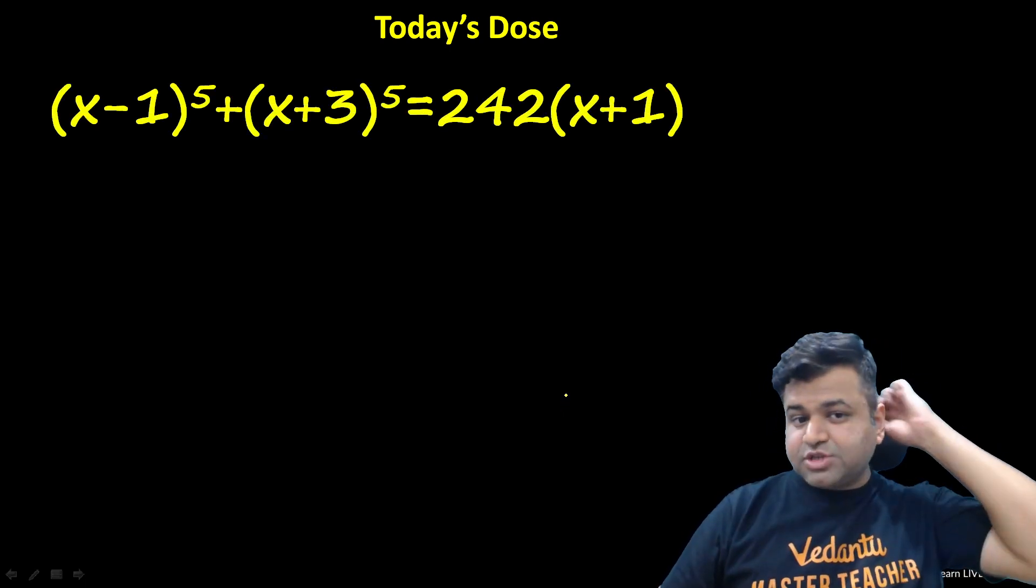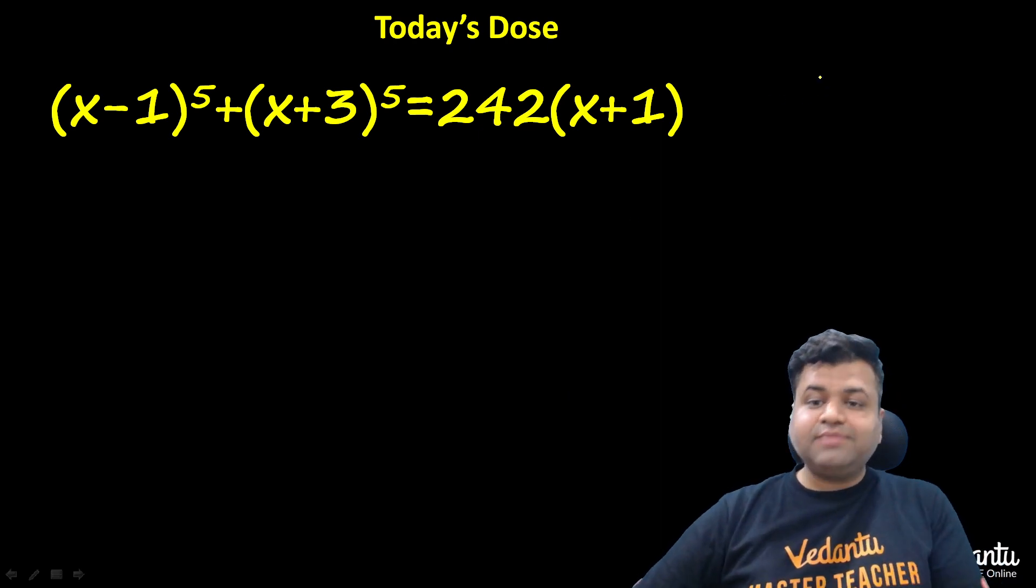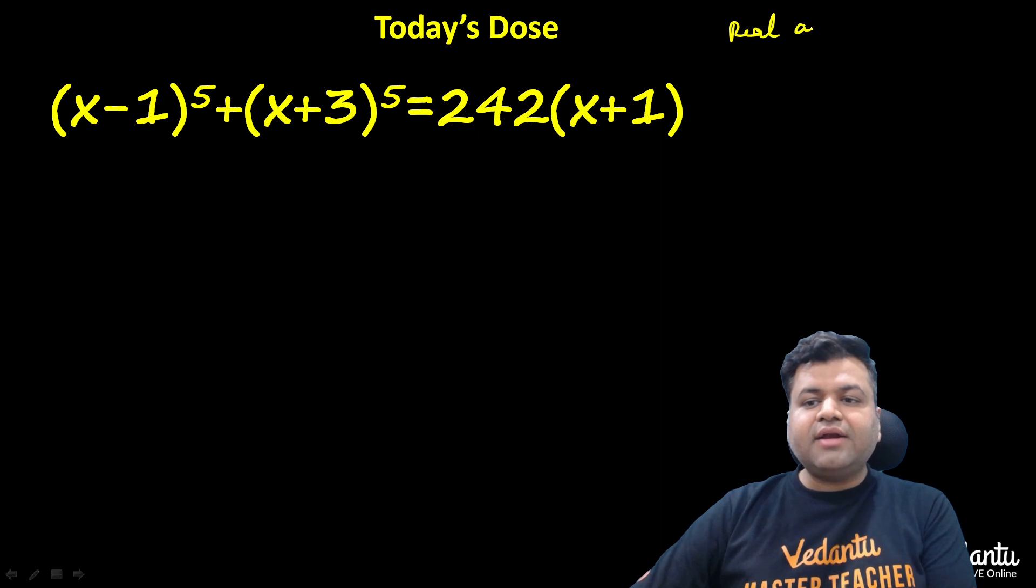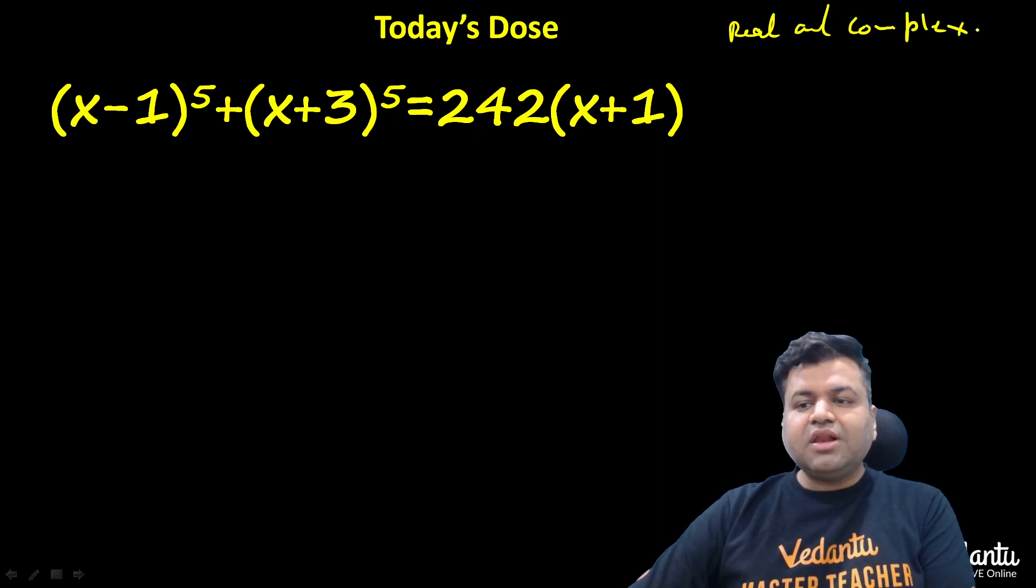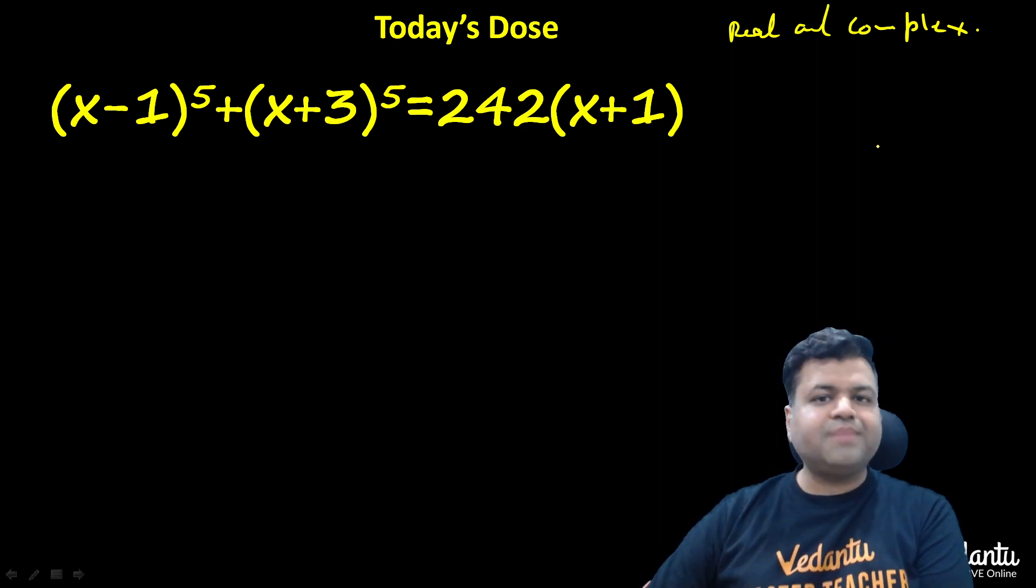This is the question: (x-1)^5 + (x+3)^5 = 242(x+1). And we need to find all the real and complex solutions. The more complex solutions are real, that means we need to find all the 5 solutions.